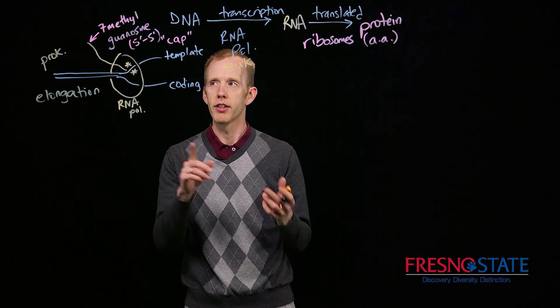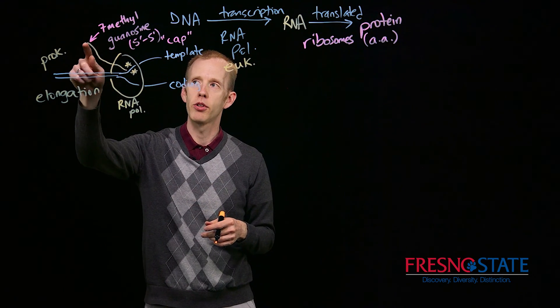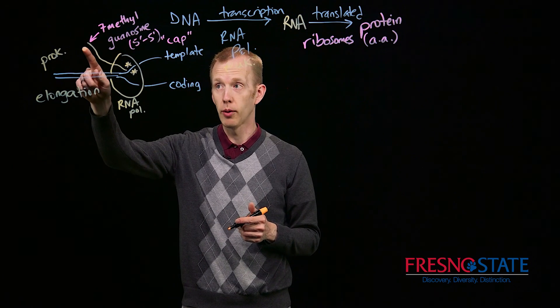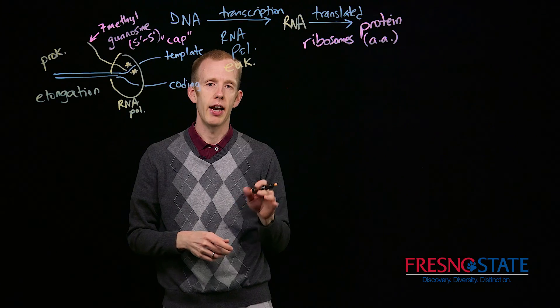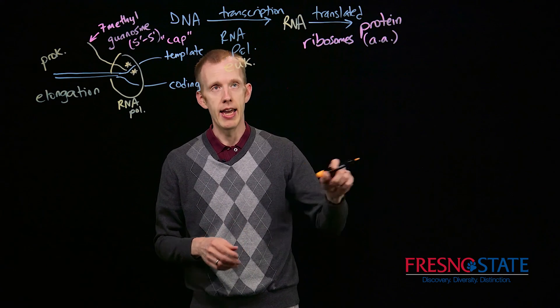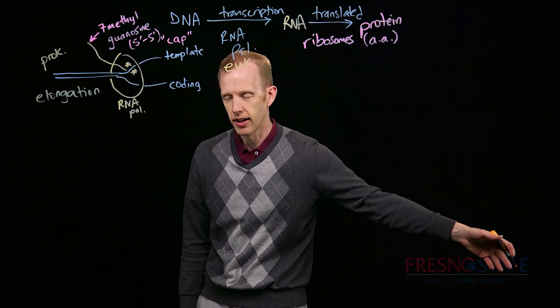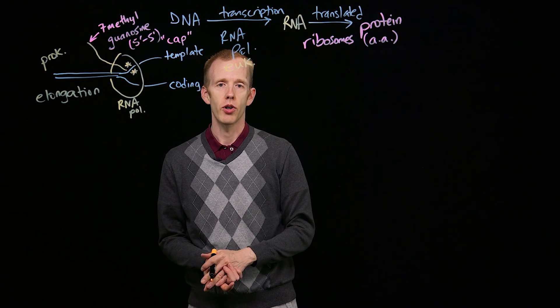that eukaryotes add a 7-methylguanosine cap to the 5' end of a transcript. And when transcription is complete, then poly-A polymerase adds a 3' A A A A A tail to the end of a transcript.